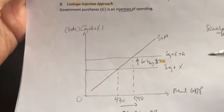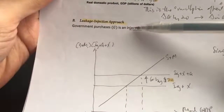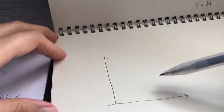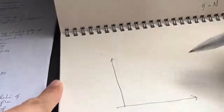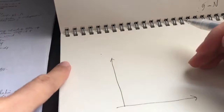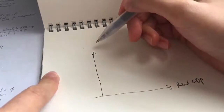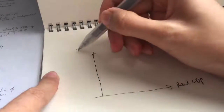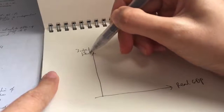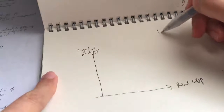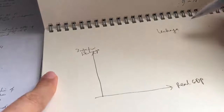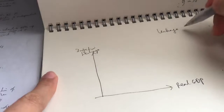Let's look at how to determine equilibrium GDP using the leakage injection approach. When using this approach, we can't use the Keynesian cross — we need a different diagram. The horizontal axis shows real GDP, and the vertical axis represents both leakage and injection.